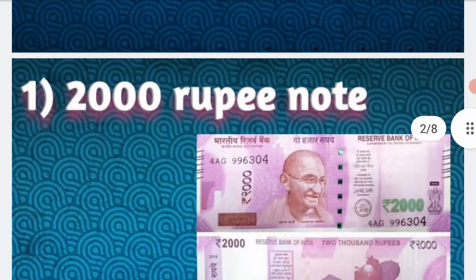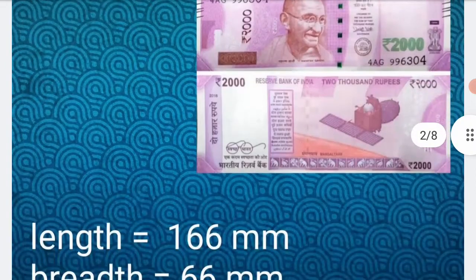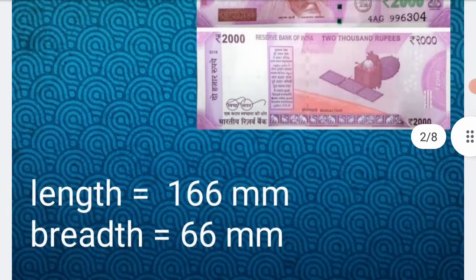Number 1: 2000 rupee note. Length is 166 mm and breadth is 66 mm.